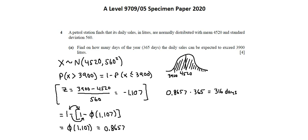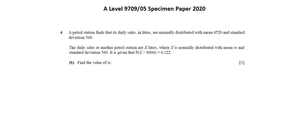Let's continue on to requirement B. The daily sales at another petrol station are x liters, where x is normally distributed with mean m and standard deviation 560. It is given that the probability that x is greater than 8,000 equals 0.122. Requirement B: find the value of m.